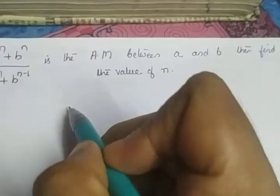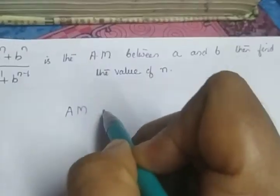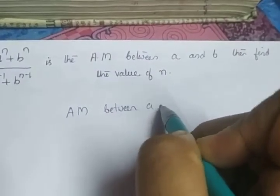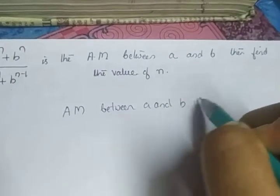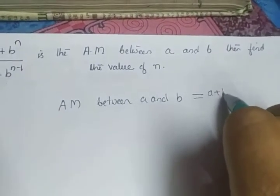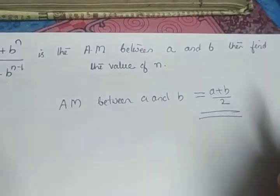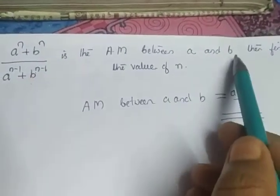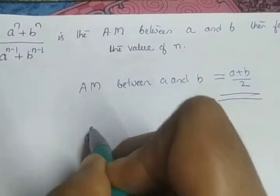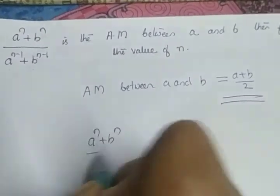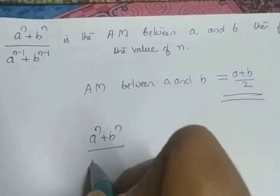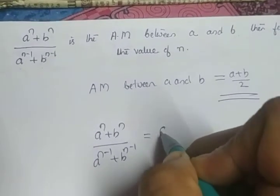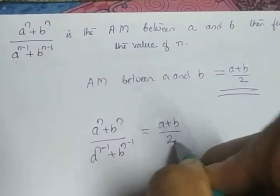The arithmetic mean between a and b is given by a plus b divided by 2. It is given that this expression is the arithmetic mean between a and b, so we can write: a raised to n plus b raised to n, divided by a raised to n minus 1 plus b raised to n minus 1, is equal to a plus b divided by 2.